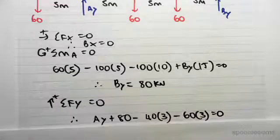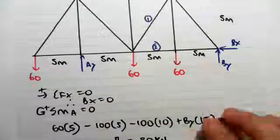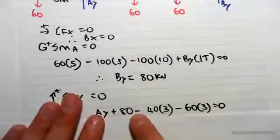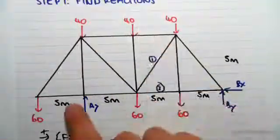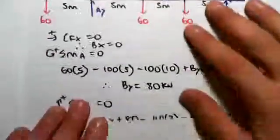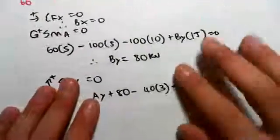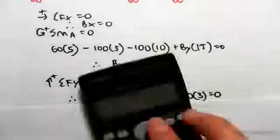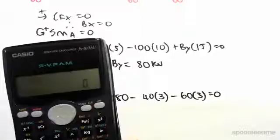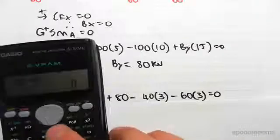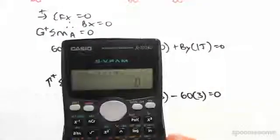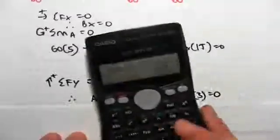Then to solve for Ay, we're going to take sum of the forces in the y direction, up as positive. So we have Ay plus By. Ay plus By is 80. We have three lots of 40 and three lots of 60, and they're both going down, so minus three lots of 40 minus three lots of 60.